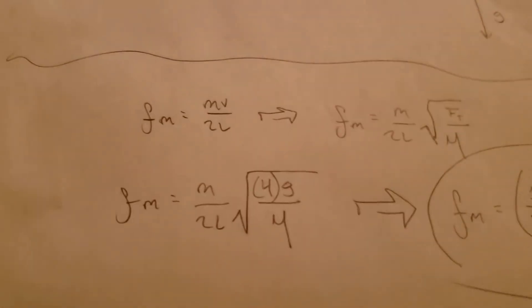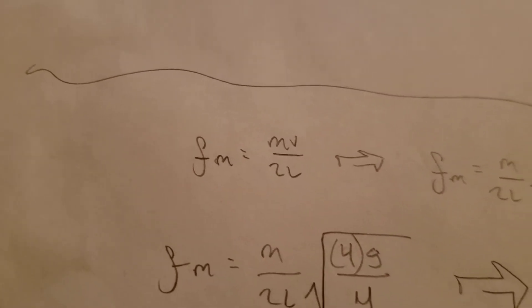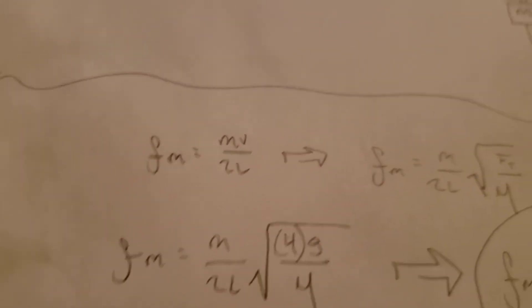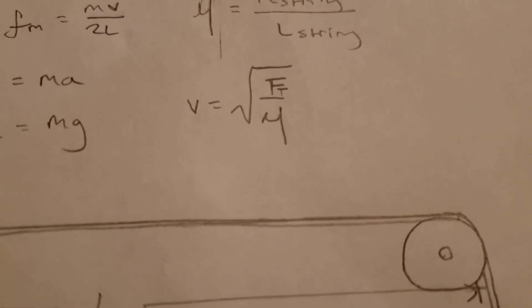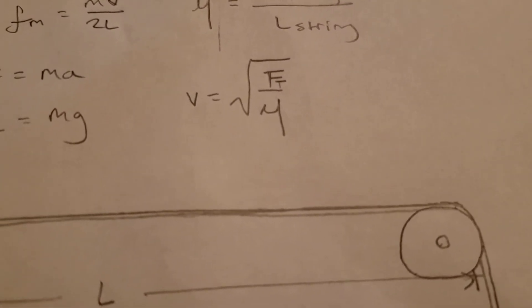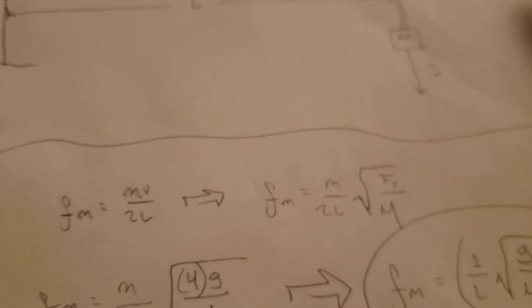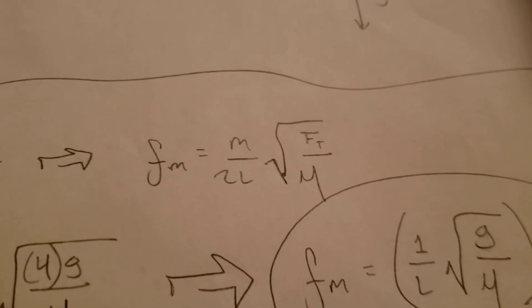Alright, so let's get breaking this down. We'll start here with frequency is equal to mv over 2L. We're going to substitute the V in this equation into this more specific definition of V, which is tension over mass per unit volume square rooted. So, that gives us this.